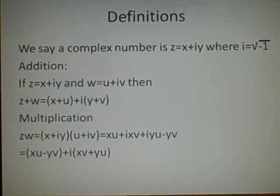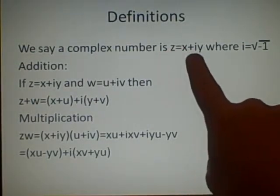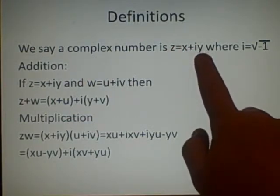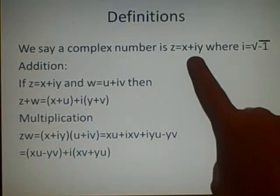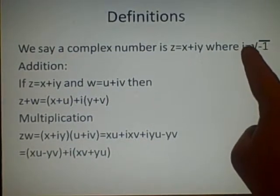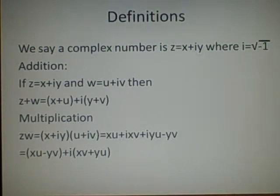We say a complex number is z equals x plus iy. Now x here is the real part of z, and y is the imaginary part. This i is denoted as the imaginary number, the square root of negative 1, because we know there isn't an answer for the square root of a negative number, so we've created an imaginary one called i.